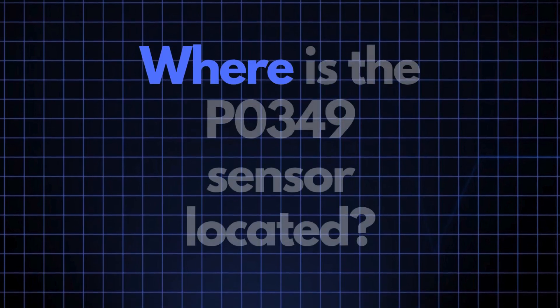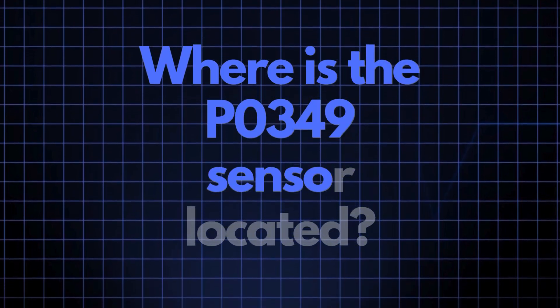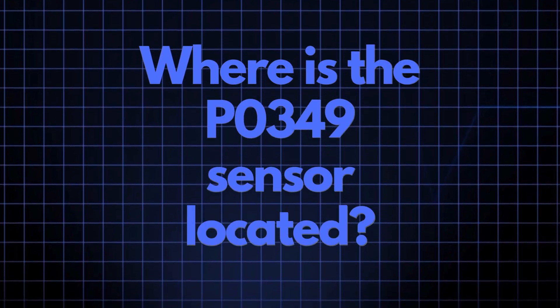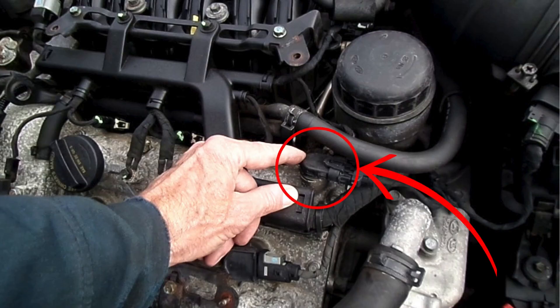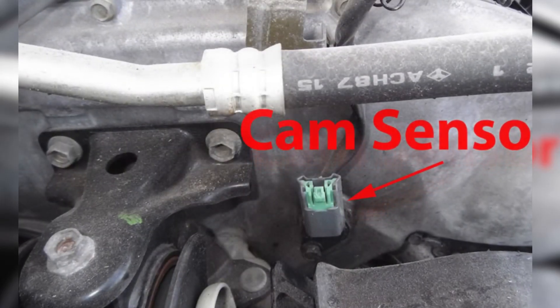The camshaft position sensor responsible for triggering the P0349 code is usually positioned close to the camshaft. Its exact location can vary depending on your vehicle's make and model, but you'll typically find it either on the valve cover or directly in the cylinder head.